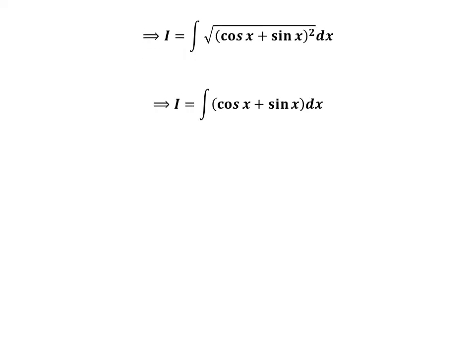Cancelling out the square root with square, we are left with the integration of cosine of x plus sine of x with respect to x.